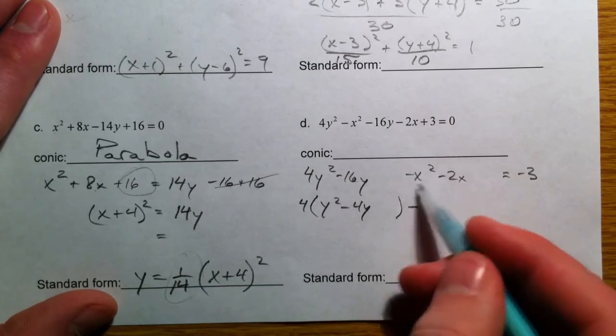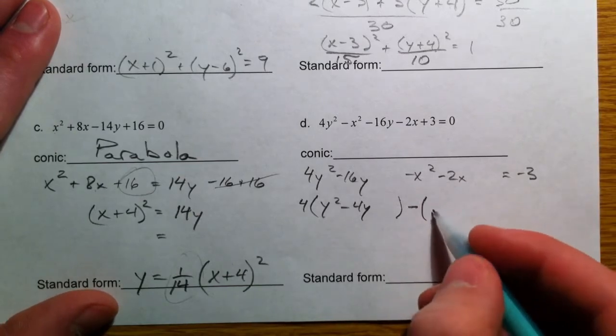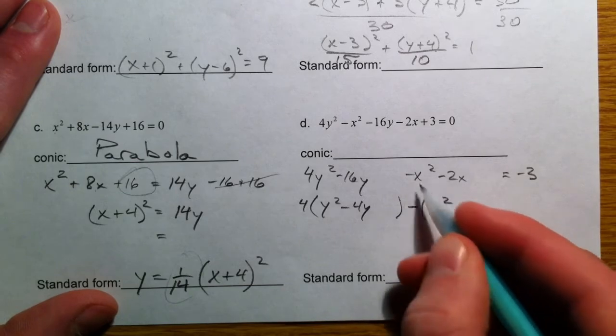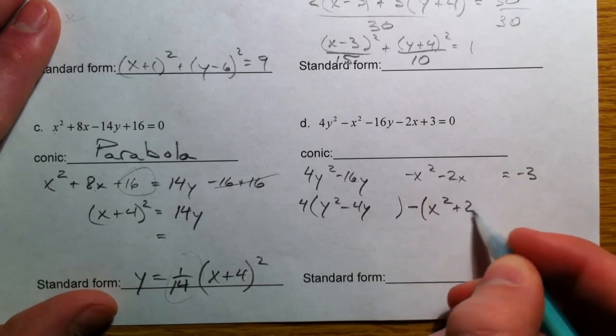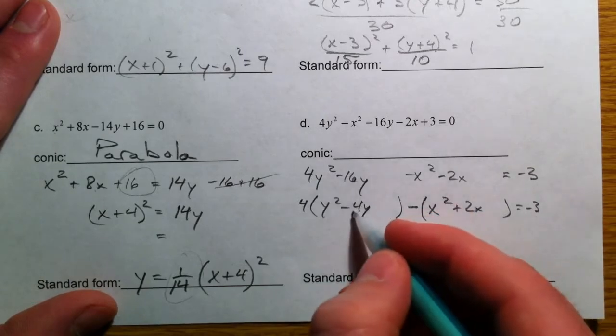With the x's, if there was a number, I'd factor out the number. But I'm not going to factor out the negative. So positive x squared, positive 2x. So, half of 4.